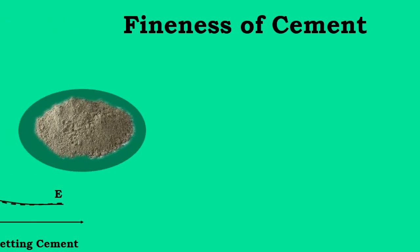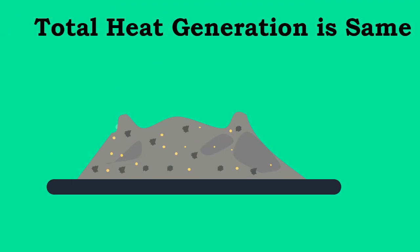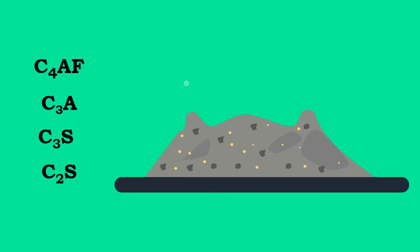The fineness of cement also has some influence on the rate of development of heat. However, total heat generation would be the same. The total quantity of heat generated in the complete hydration will depend upon the relative quantities of the major compounds present in cement.